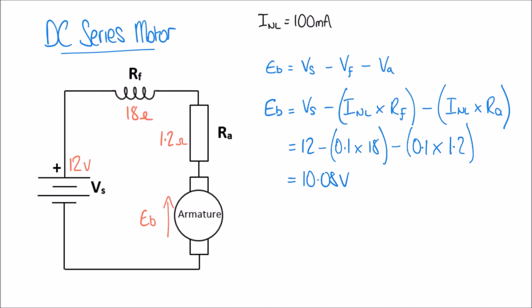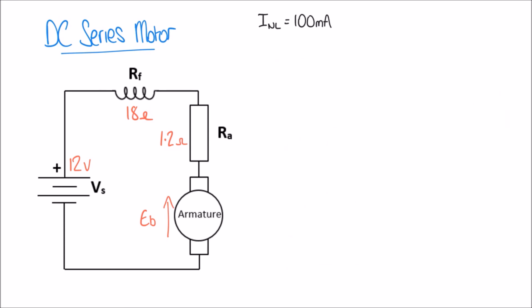Now we can calculate the electrical power of the armature using P = I × V. The current through the armature is the same as the rest of the series circuit — 0.1 amps — multiplied by the back EMF of 10.08 volts, giving an armature power of 1.008 watts, roughly 1 watt.